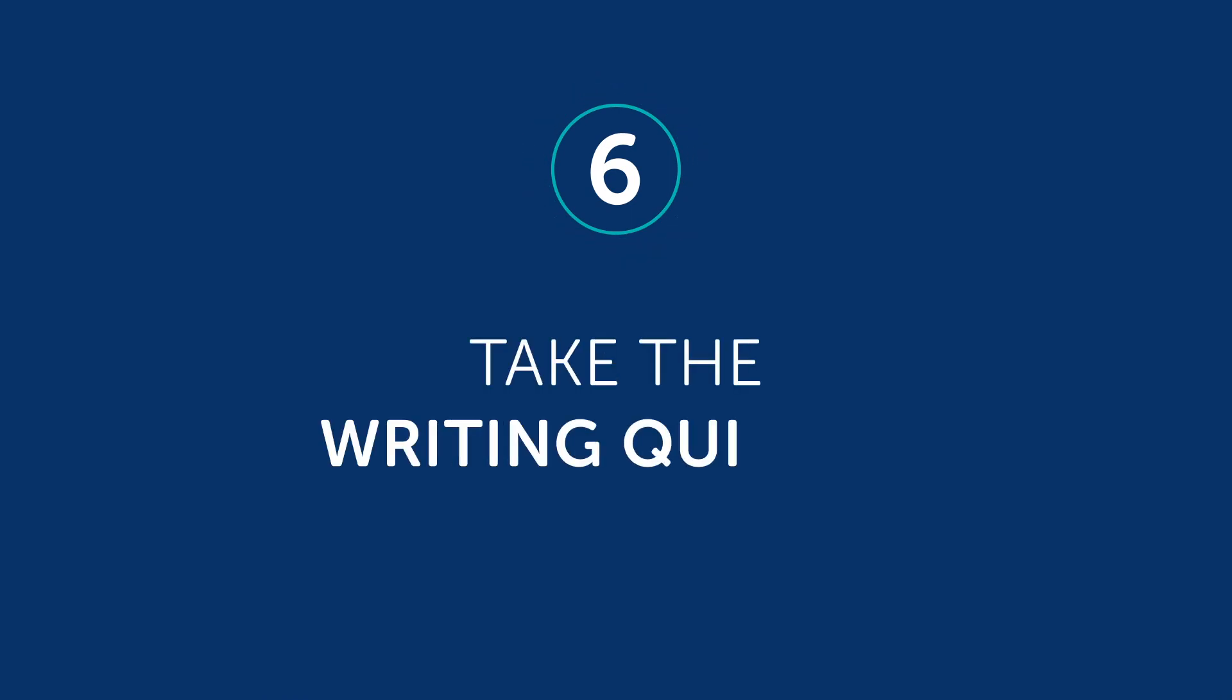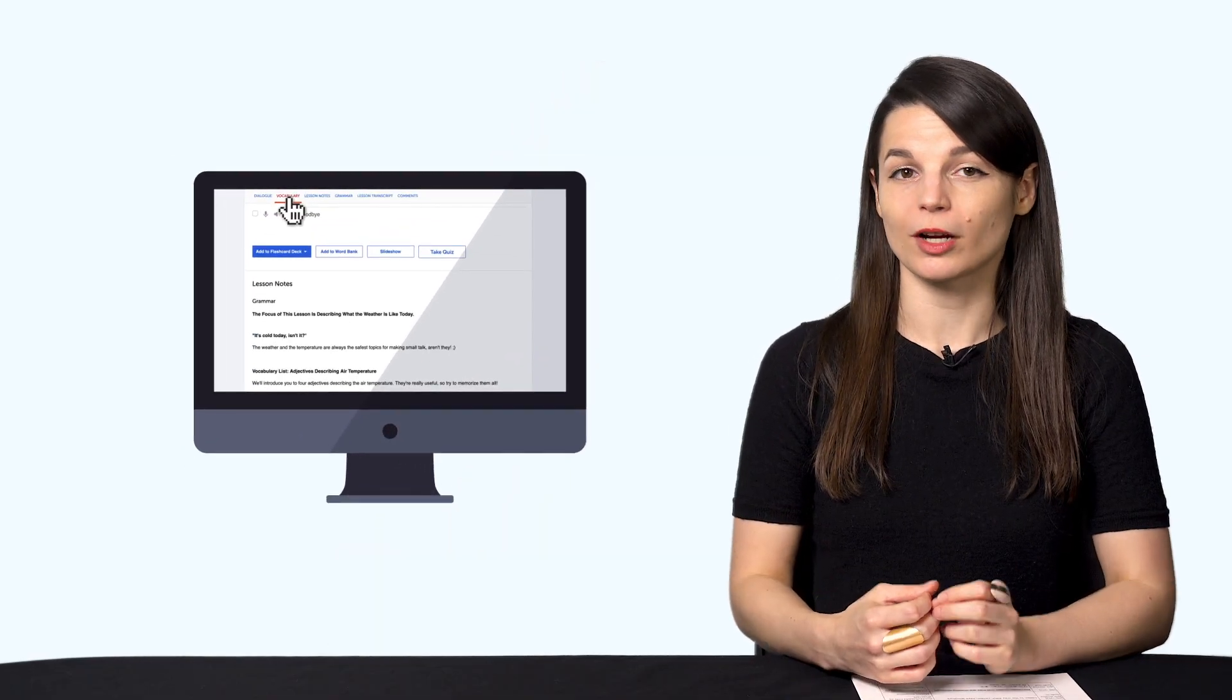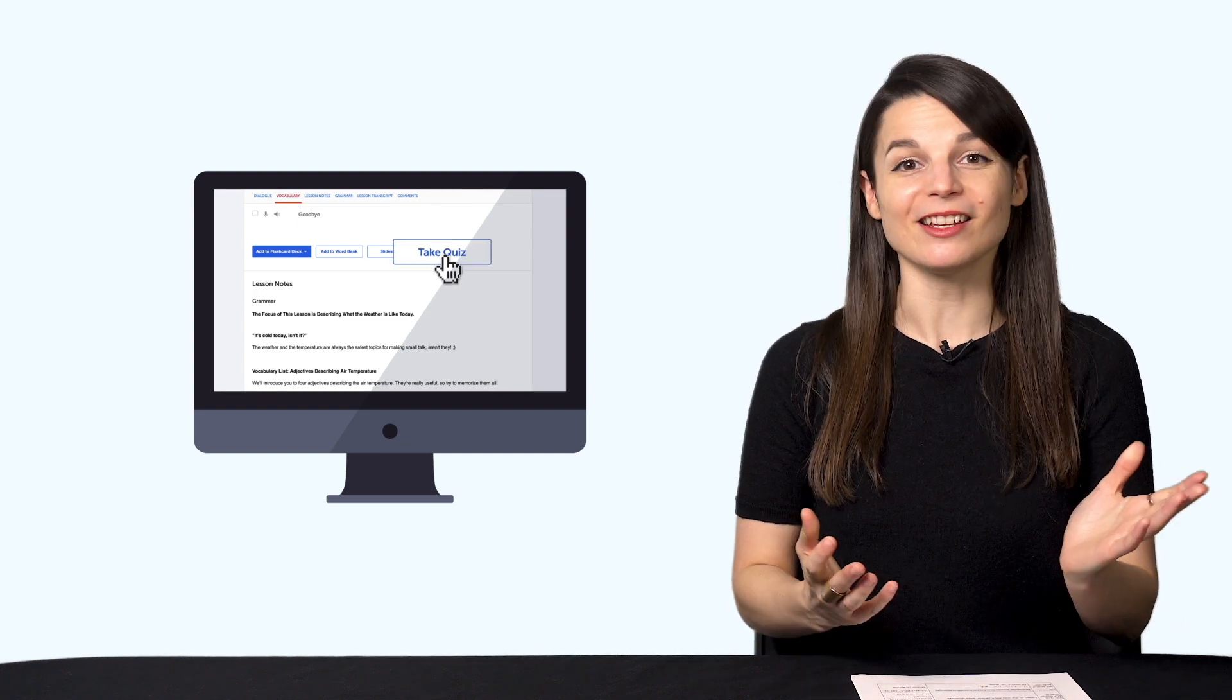Number six. Take the writing quizzes. With every lesson, you'll get review quizzes to help you master what you've learned. Just scroll down to the Vocabulary section, or click on Vocabulary. Then, click on Take a Quiz. And that's it. Now you know how to improve your target language on your own. Just copy things out.